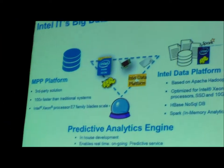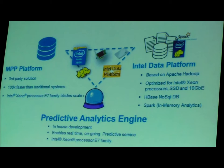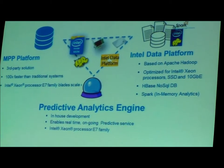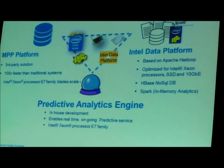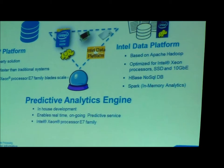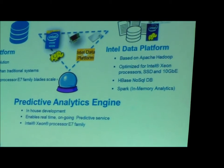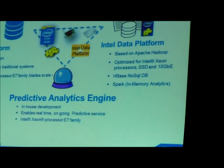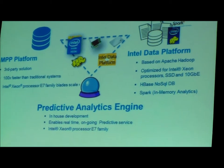Diving into the big data platform specifically, it comprises three parts. First, the MPP platform — 100x faster than traditional systems, all based on E7 blades — which was especially important for that security BI use case where it all started. Second, the Intel Data Platform based on Intel's distribution of Hadoop, optimized with security features built into our silicon and Xeon processors, Intel networking, NIC solutions, SSDs, and we're bringing in Spark and Shark as well. Third, we built an in-house predictive analytics engine with the algorithms we apply to our specific use cases and workloads.